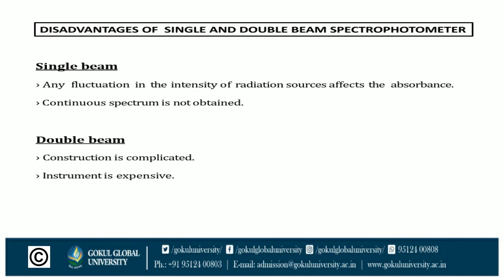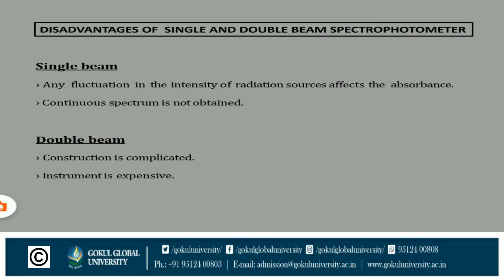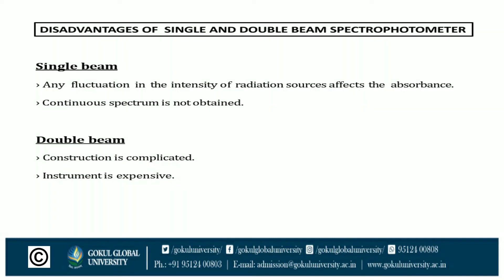The disadvantages of the double beam spectrophotometer are that the construction is complicated and the instrument is expensive. The single beam is cheaper in comparison to the double beam, and the double beam construction is more complicated than the single beam.